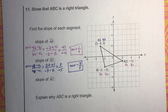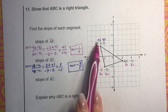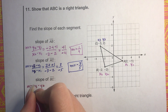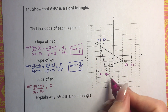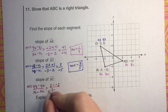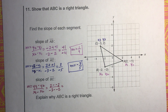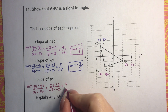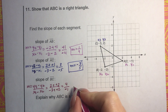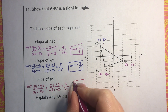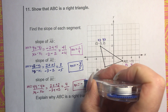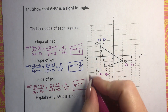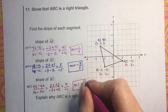For the slope of BC, using X2, Y2 and X3, Y3: slope equals Y3 minus Y2 over X3 minus X2. Y3 is 2 minus Y2 which is negative 2, giving 2 plus 2 equals 4 — positive 4. X3 is negative 3 minus X2 which is negative 2, giving negative 3 plus 2 equals negative 1. So the slope is 4 over negative 1, which means the slope of BC is negative 4.